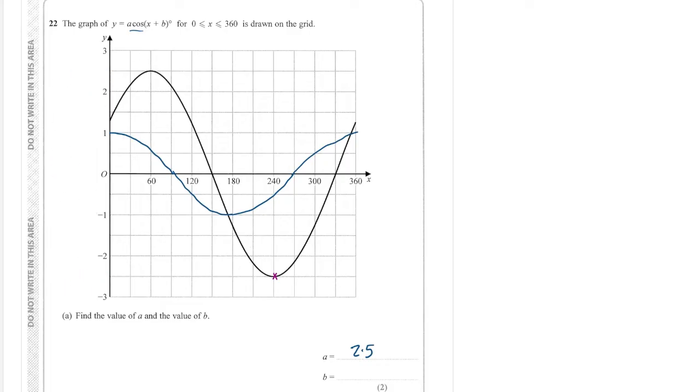Okay, now we need to look at how this graph has shifted along. Well, the maximum point was here and then it's moved to here. So it's moved 60 degrees to the right. So moving to the right, you would take away inside the bracket so that you can say that b is minus 60.